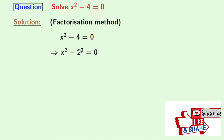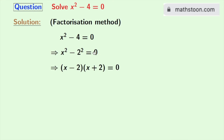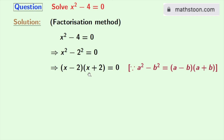Now factorizing the left hand side using the rule of a squared minus b squared, we get x minus 2 times x plus 2 is equal to 0. Now we all know that if the product of two numbers is 0, then the numbers individually will be 0.